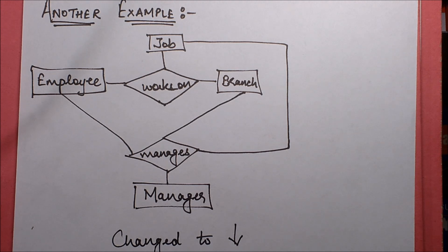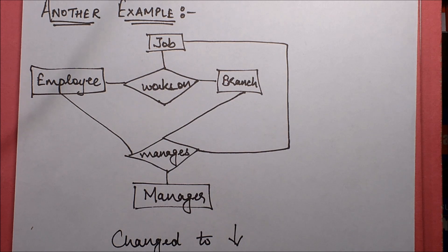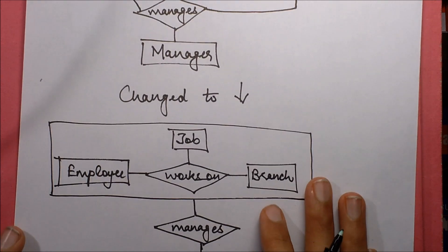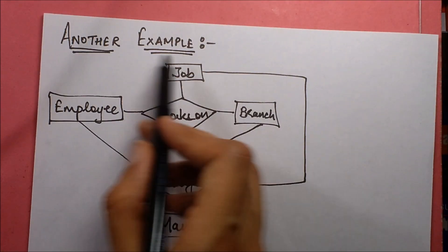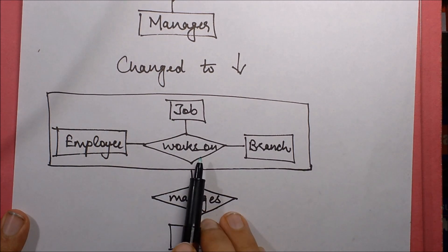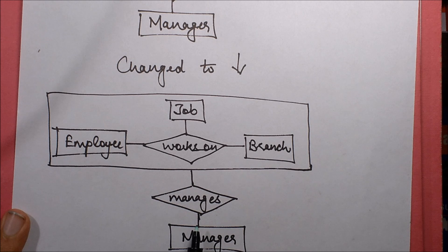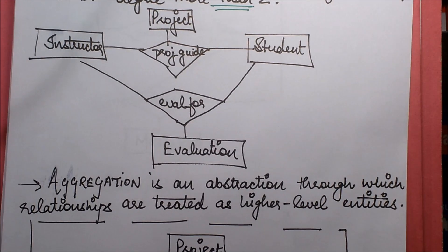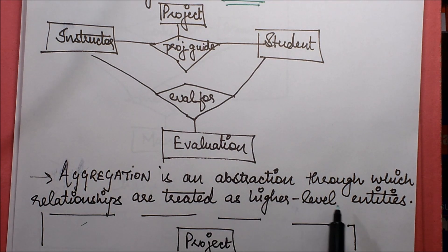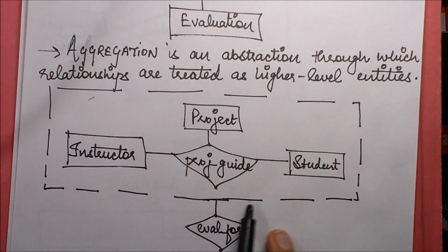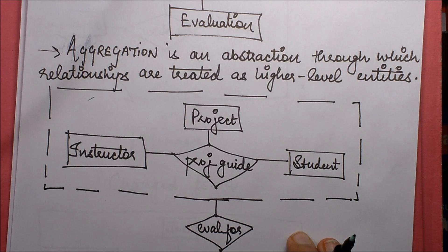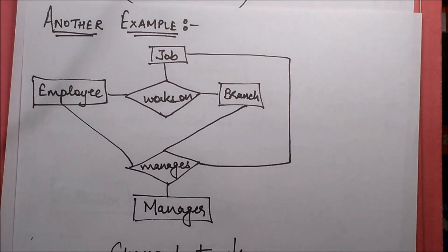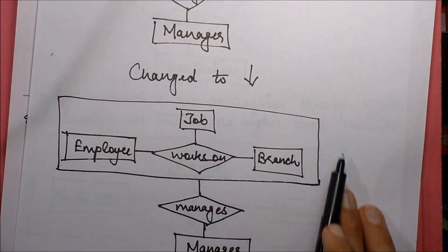This entire thing is becoming somewhat complex. To aggregate, we abstract out a high-level concept: the employee works on this job in this particular branch, and he also manages tasks as a manager. The basic notion of aggregation is to abstract out relationships which are treated as high-level entities — like here, the project guide relationship was treated as a high-level entity, and similarly the works-on relationship was treated as a high-level entity set.